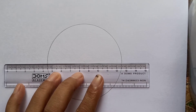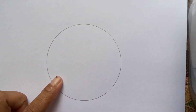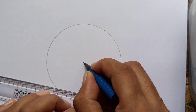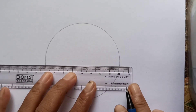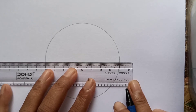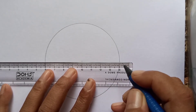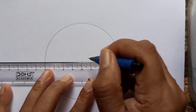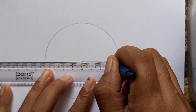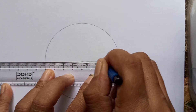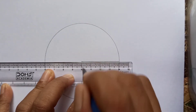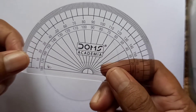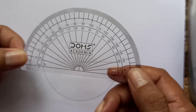Now we are going to study how to divide a circle using a protractor. We have a circle of 4 centimeter radius. From the center of the circle, draw a radius — a line from the center point to the edge of the circle.